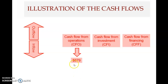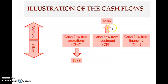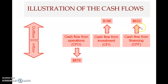You have cash flow from operations (CFO), then cash flow from investment (CFI), then cash flow from financing (CFF). There is a cash inflow from operations of $879 million. For investment, you have a cash outflow of $196 million. From financing, you have another cash outflow of $633 million.